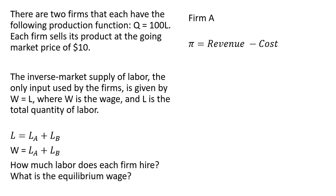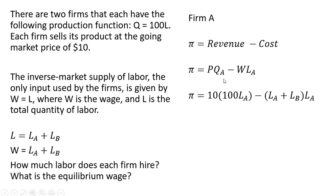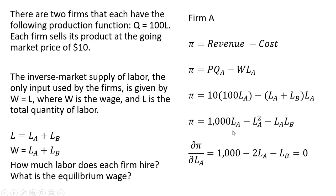Let's start with firm A. Firm A is going to maximize profit, which is revenue minus cost, where revenue is price — $10 — times the output of firm A, minus the wage times the number of workers used by firm A. The price is $10, the quantity is 100L subscript A, and the wage we plug in as L subscript A plus L subscript B, all multiplied by L subscript A. Simplifying that expression, we take a partial derivative of the profit function with respect to L subscript A, set that result equal to 0 because we're maximizing, and we get back this result.